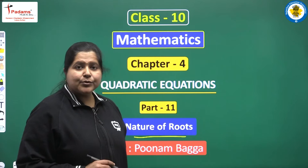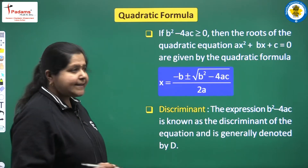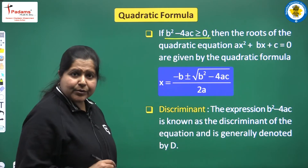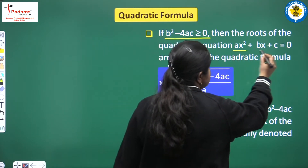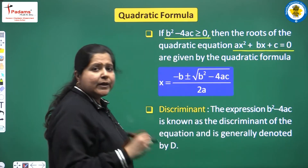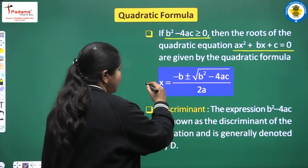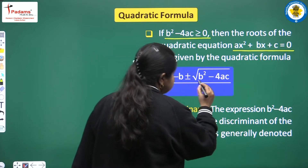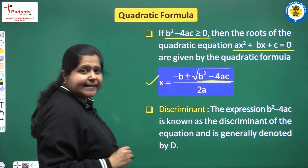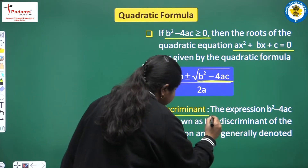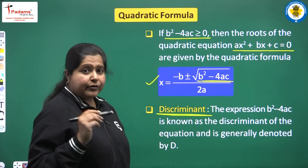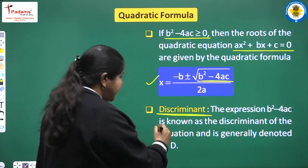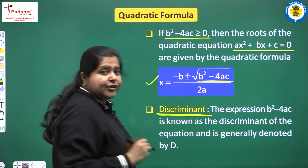For this we go back to the quadratic formula, which says that if b² minus 4ac is greater than or equal to 0, then the roots of equation ax² + bx + c = 0 can be given by this formula. In this formula, focus on the expression b² minus 4ac — it is known as the discriminant of the equation. We already know this, but here we will discuss the role it plays in deciding the nature of the roots.